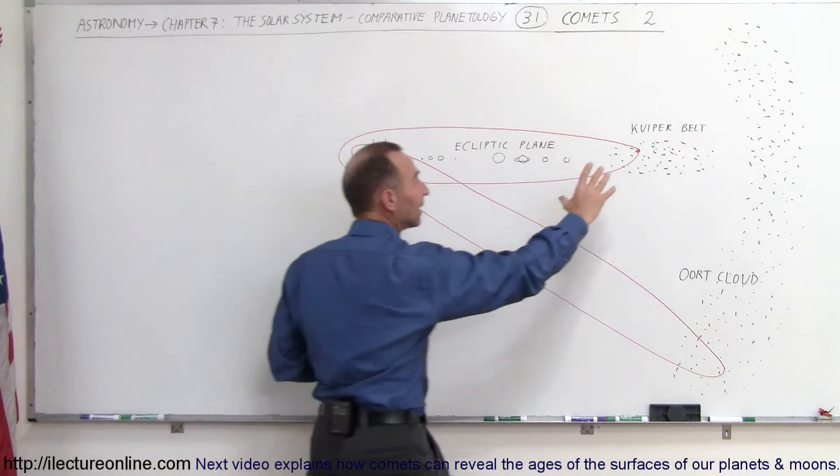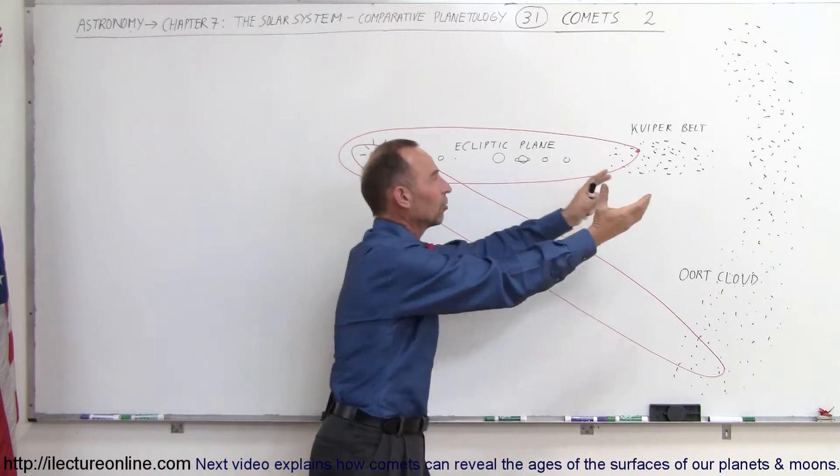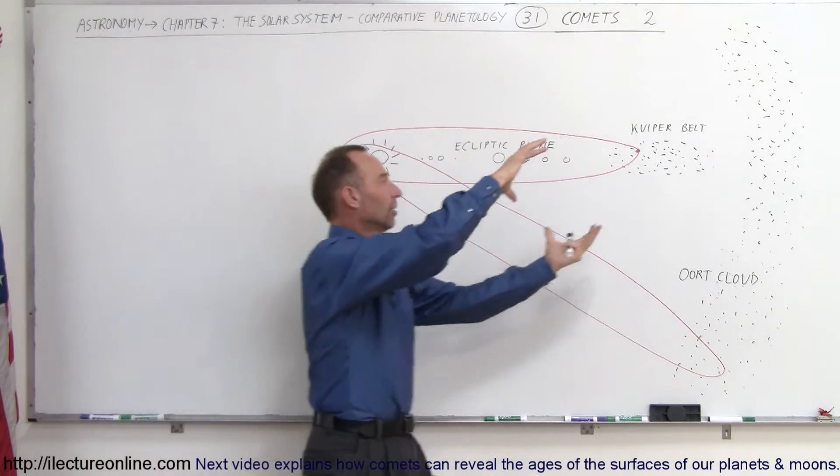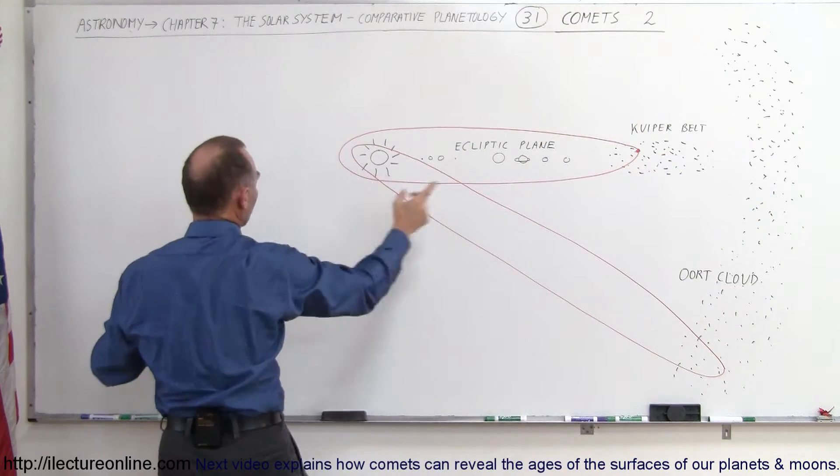And they reside in a region that is kind of like a donut-shaped region, a flattened donut-shaped region that then encircles the entire inner solar system. So imagine this big tube coming out here and going all the way around like that, around the Sun.